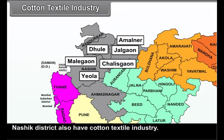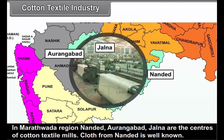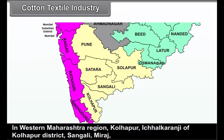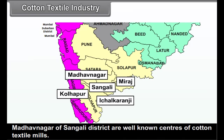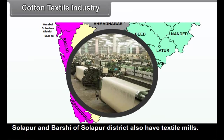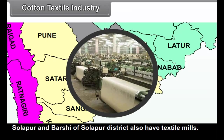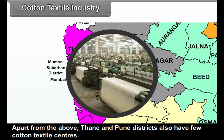Besides this, Malegaon and Yavla in Nasik district also have cotton textile industry. C. Aurangabad Division - In the Marathwada region, Nandur, Aurangabad and Jalna are the centres of cotton textile mills. Cloth from Nandur is well known. D. Pune Division - In western Maharashtra region, Kolhapur, Ichalkaranji of Kolhapur district, Sangli, Miraj and Madhavnagar of Sangli district are well known centres. Solapur and Barsi of Solapur district also have cotton textile mills. Thane and Pune districts also have a few cotton textile centres.